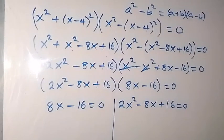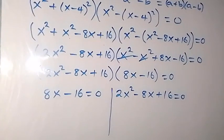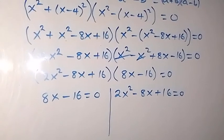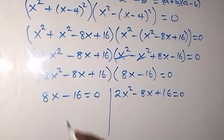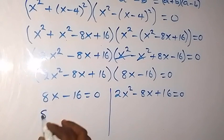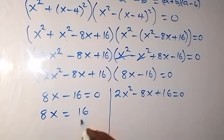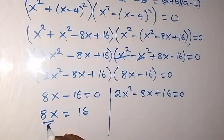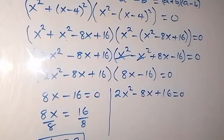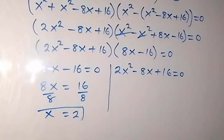Solving the first case for x: bringing 16 to the other side gives 8x equals 16, then dividing both sides by 8 gives x equals 2, which is a real solution.